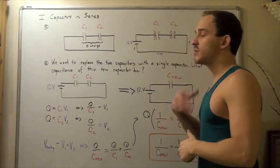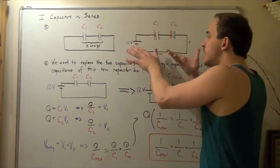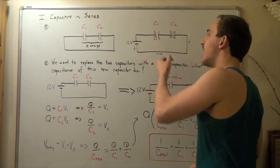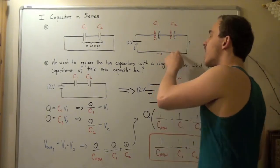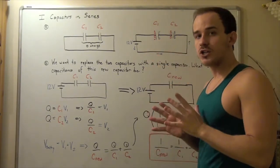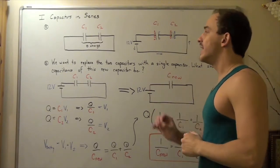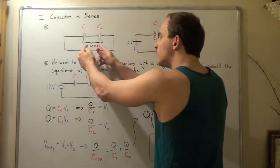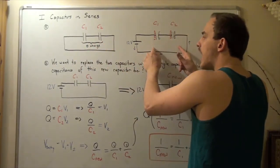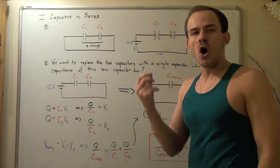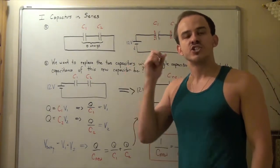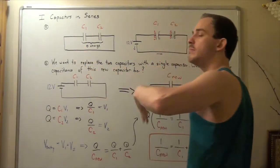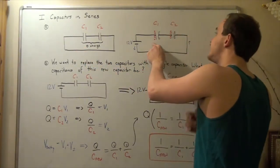Now suppose we were given this electric circuit and asked to find the charge on each capacitor when they are fully charged. Before we get into that, notice that we go from zero charge to some unknown charge. Recall the law of conservation of charge, which states that charge is conserved. So if we start at a zero charge, we must end up at a zero charge overall.